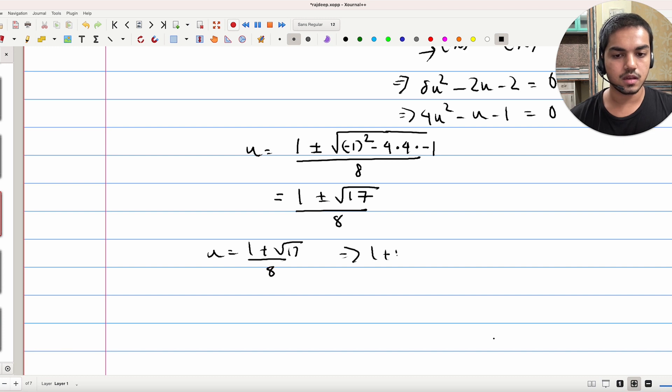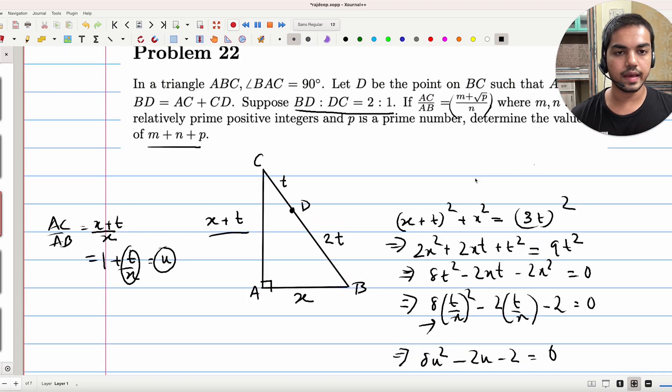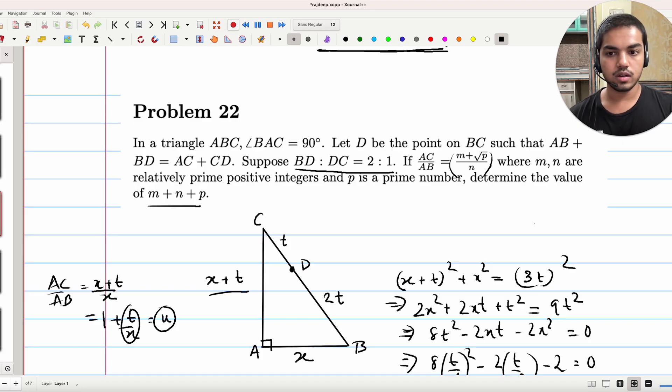Which implies that 1 plus U is equal to 1 plus this thing, which is just 9 plus root 17 by 8. If we look at the conditions imposed on M and P in this form, we want them to be relatively prime and P be a prime number.